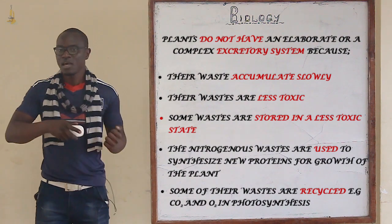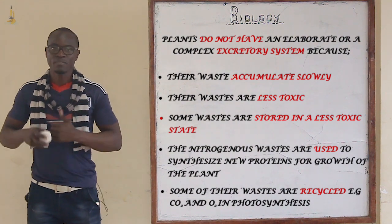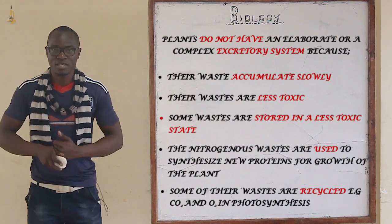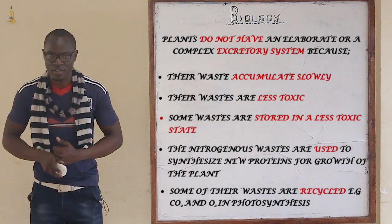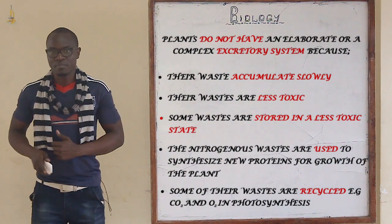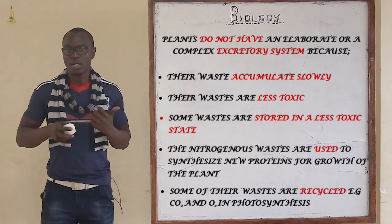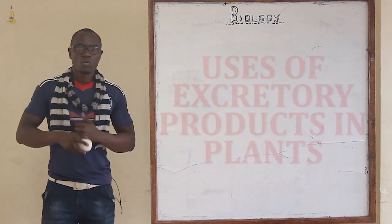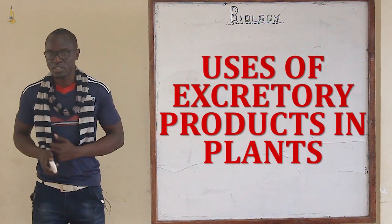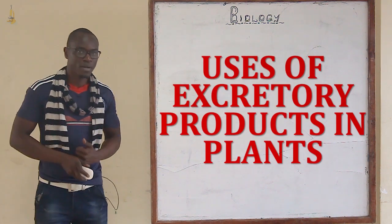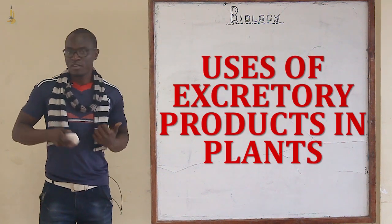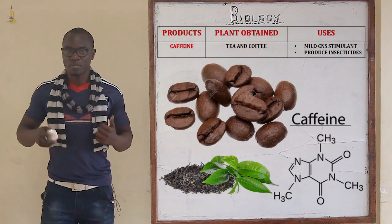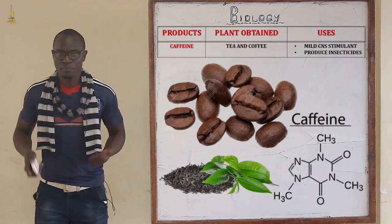Nitrogenous waste in plants is always used to synthesize new proteins, and waste in plants is always recycled — for example, carbon dioxide and oxygen are used in the dark stage and light stage of photosynthesis respectively. Waste in plants is also always converted to a less toxic substance. The first excretory product we have is caffeine.